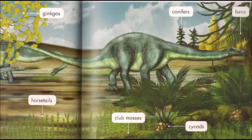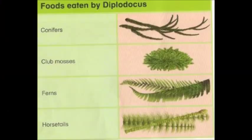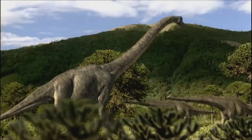The main trees were still conifers and there were lots of smaller plants such as club mosses, ferns and horsetails. There were more dinosaurs and the first birds appeared.